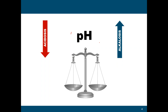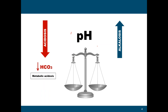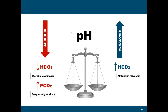There are reasons why the pH changes, and that is because of the imbalance between your carbon dioxide and your bicarbonate. When your bicarbonate is low, the patient develops metabolic acidosis. When your bicarbonate is high, the patient has metabolic alkalosis. When your pCO2 is high, the patient has respiratory acidosis. And when your pCO2 is low, the patient is having respiratory alkalosis.